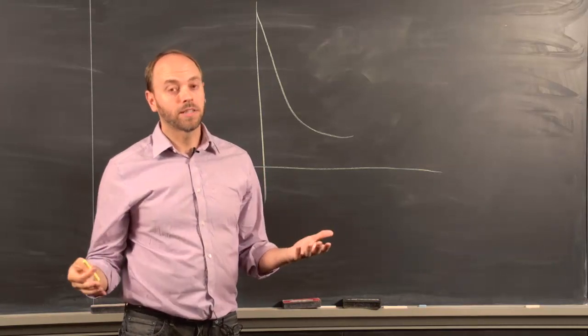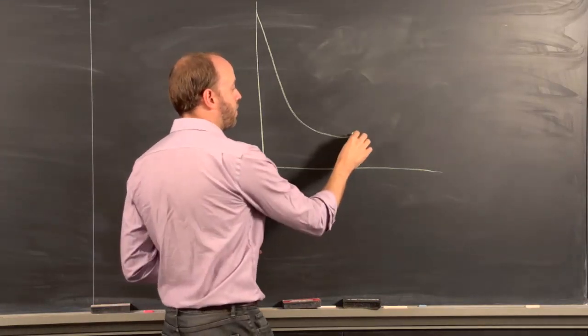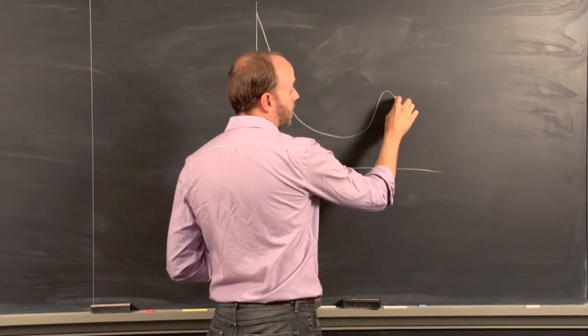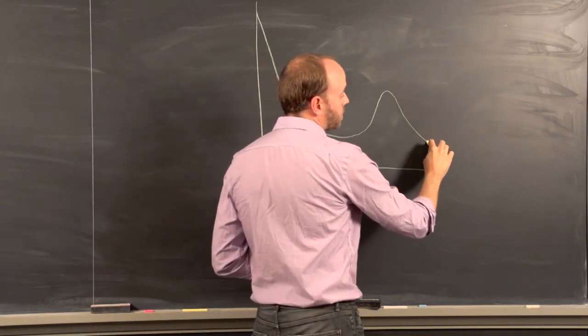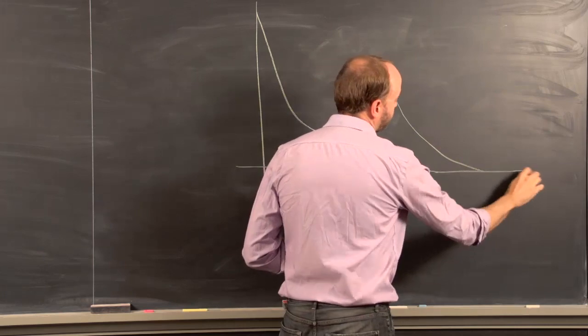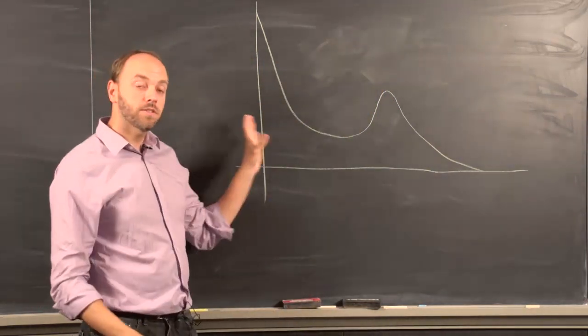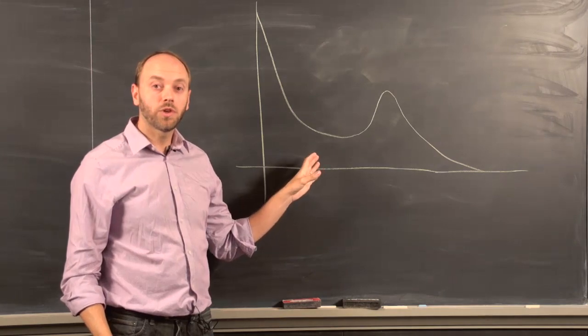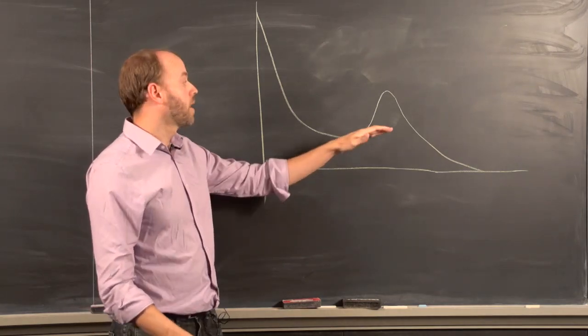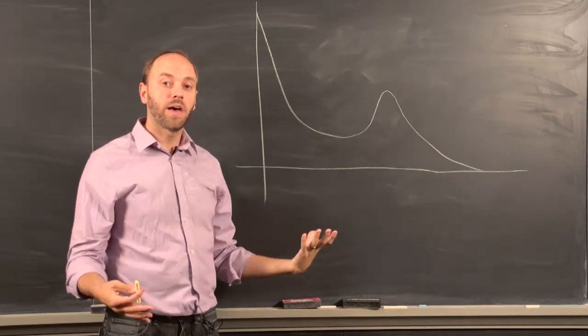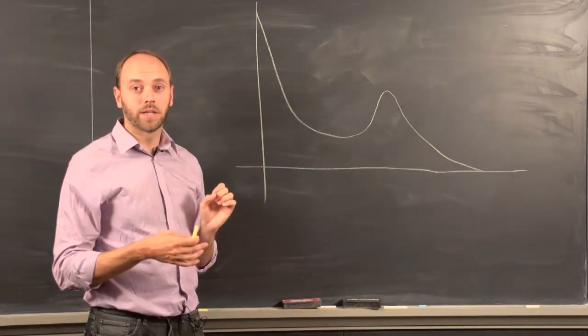Most primates and humans have an adolescent growth spurt at some point where they begin to grow faster again, and then growth gradually peters out as you enter into adulthood. This growth curve through life is fairly characteristic of primates in general, although primates differ in how much of an adolescent growth spurt they have, whether males and females both have an adolescent growth spurt, and the exact timing of these events.